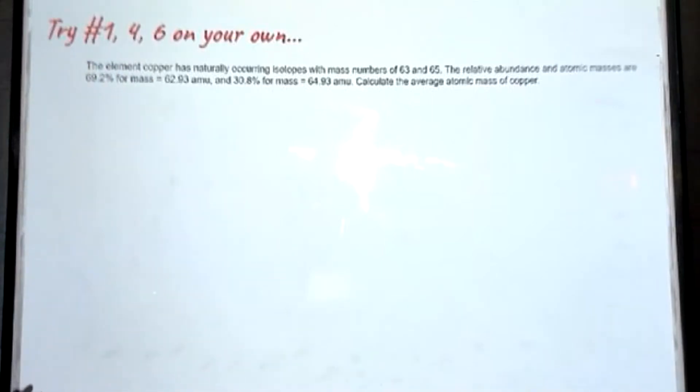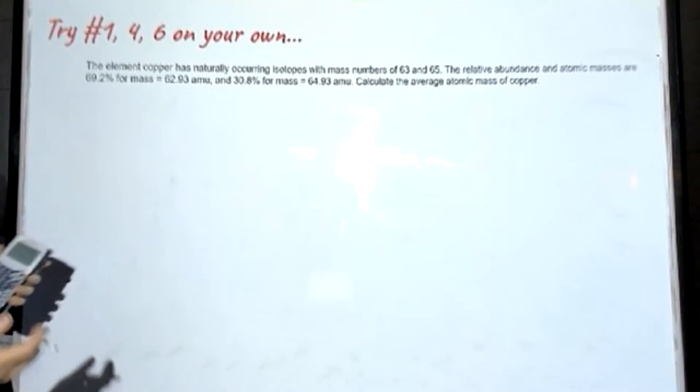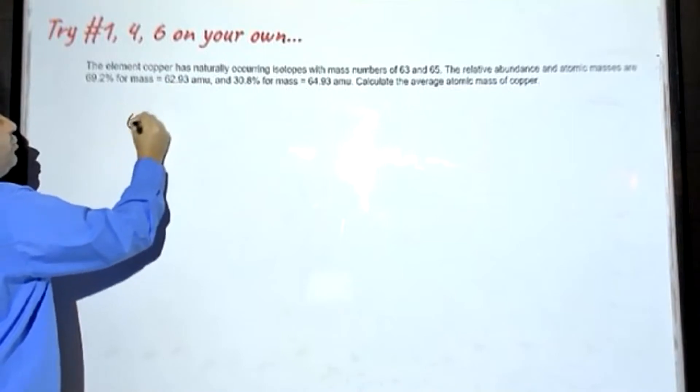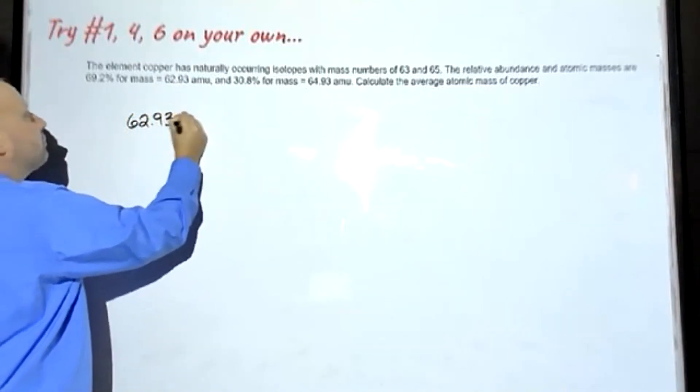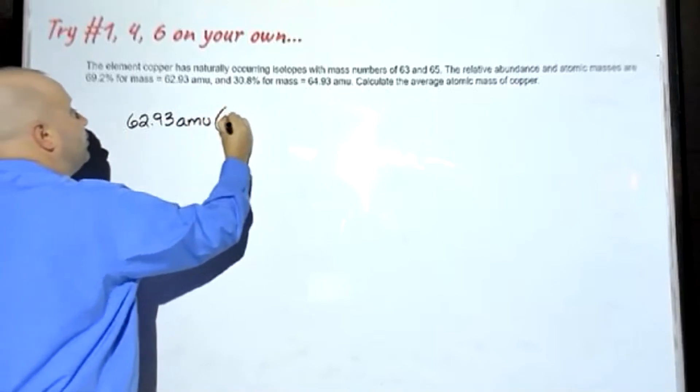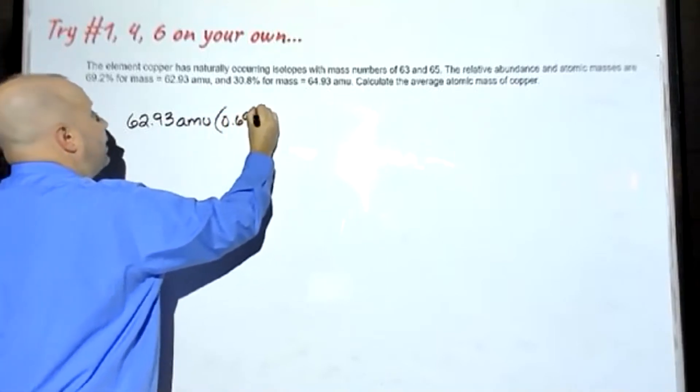First, let's look at problem number 1. The element copper has naturally occurring isotopes with mass numbers of 63 and 65. The relative abundance for each of the masses is given, so now they give you the specific mass here, 62.93 AMU, and we're going to multiply that by 0.692.